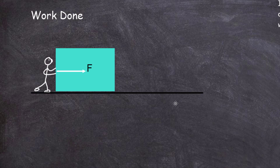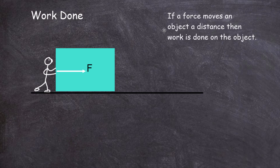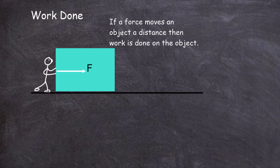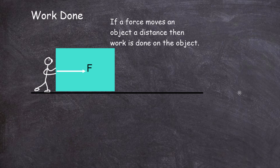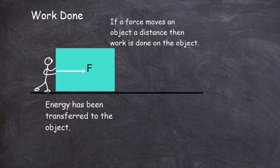Now consider this: if the person pushed with all their might with a force, sweat was coming out their forehead, but the block didn't move, there'd be no work done on the block. Because in the world of physics, work can only be done if a force moves an object. If a force moves an object a distance, then work is done on the object. We can think of work being done on the object as energy being transferred to the object by the force.